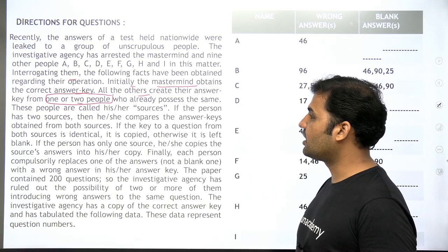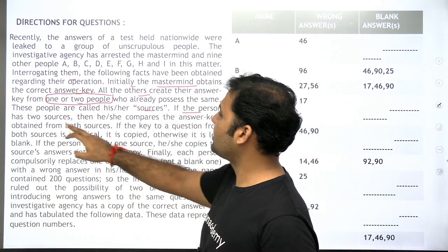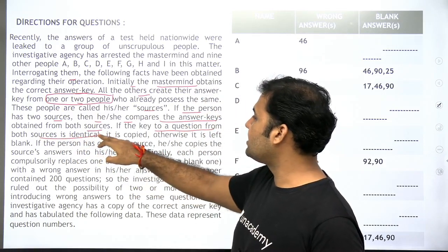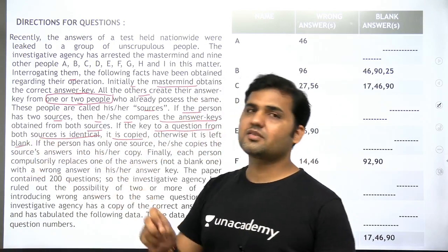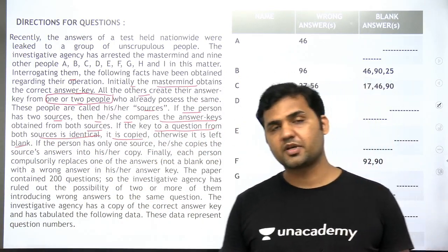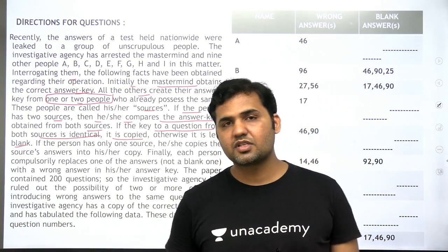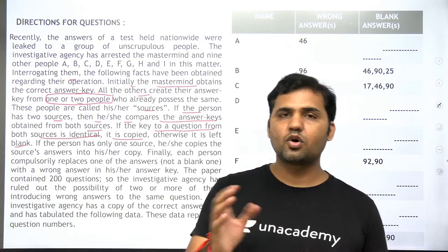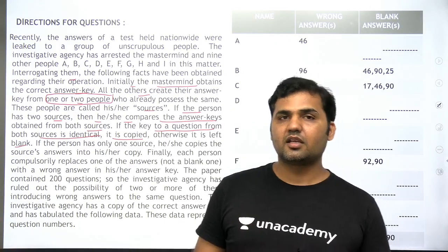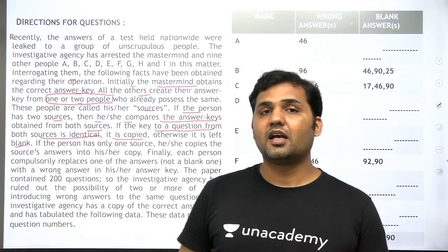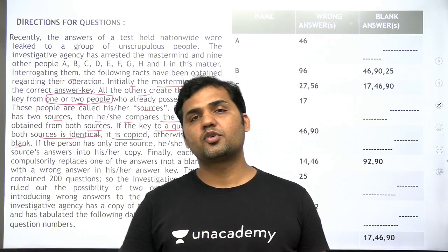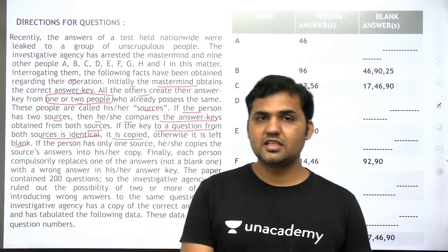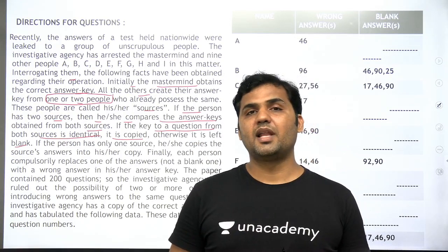These people are called his or her sources. If the person has two sources, then he or she compares the answer keys obtained from both sources. If the key to a question from both sources is identical, it is copied. Otherwise it is left blank. If you are taking an answer key from two different sources and for a particular question both answers are the same, you copy it. If they differ, you leave that question blank.